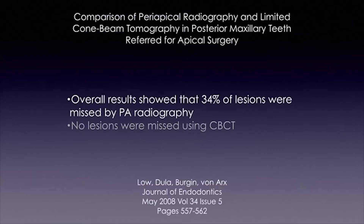Lowe, Doula, and Bergen et al. compared periapical radiography and limited cone beam computed tomography in posterior maxillary teeth referred for apical surgery. They found that 34% of the lesions were missed by periapical radiography, and virtually no lesions were missed with cone beam computed tomography.